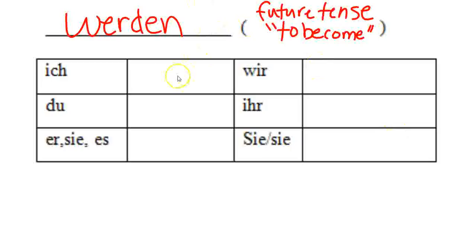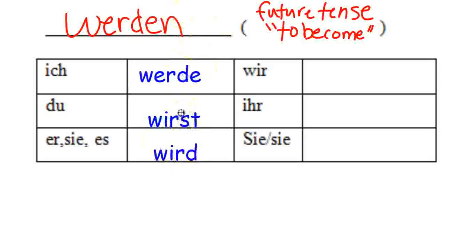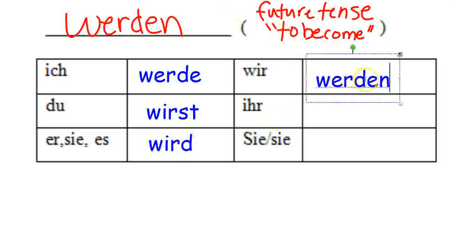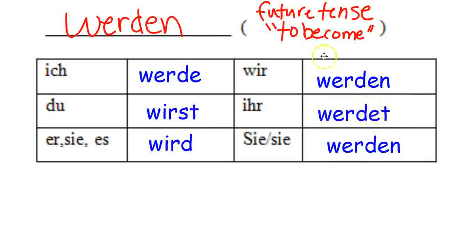Here is the conjugation of 'werden': ich werde, du wirst, er/sie/es wird, wir werden, ihr werdet, sie werden. Note the buffer 'e' in 'ihr werdet'.